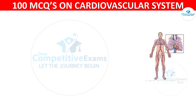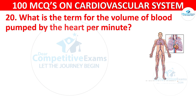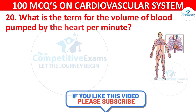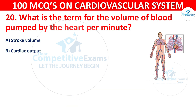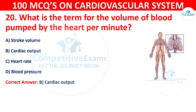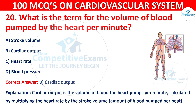Q20. What is the term for the volume of blood pumped by the heart per minute? Options are: stroke volume, cardiac output, heart rate, or blood pressure. The correct answer is B — cardiac output. Cardiac output is the volume of blood the heart pumps per minute, calculated by multiplying the heart rate by the stroke volume — the amount of blood pumped per beat.